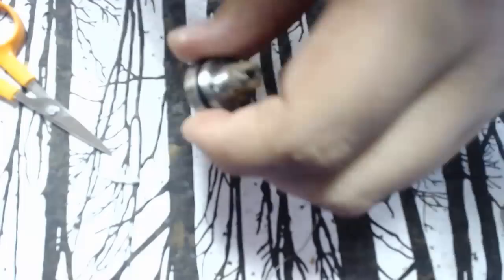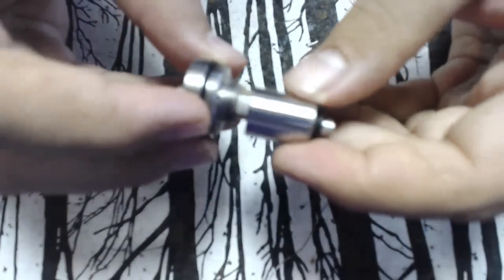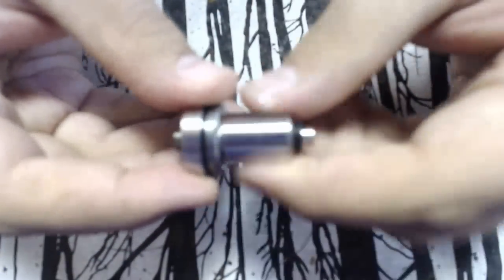And that is the wicking of the Kayfun. Then you have final assembly. I'll go ahead and do that real quick. Then I'll pull the camera back up and have a quick vape on it. This is a max VG juice. I will be vaping this at about 17 watts.